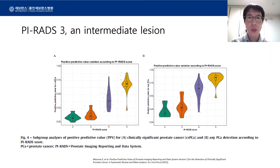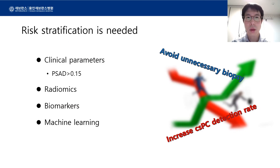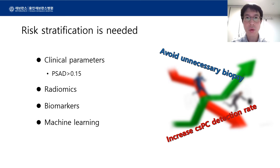This detection rate of PI-RADS 3 lesions is not low enough to consider observation, but doing biopsies for all these lesions would result in too many biopsies on benign or indolent cancer lesions. The lesions should be carefully stratified and selected to avoid unnecessary biopsies while increasing the clinically significant prostate cancer detection rate, and at the same time minimizing the risk of missing significant prostate cancers. I will review recent studies on clinical, radiomic parameters, and biomarkers to improve stratification of PI-RADS 3 lesions.